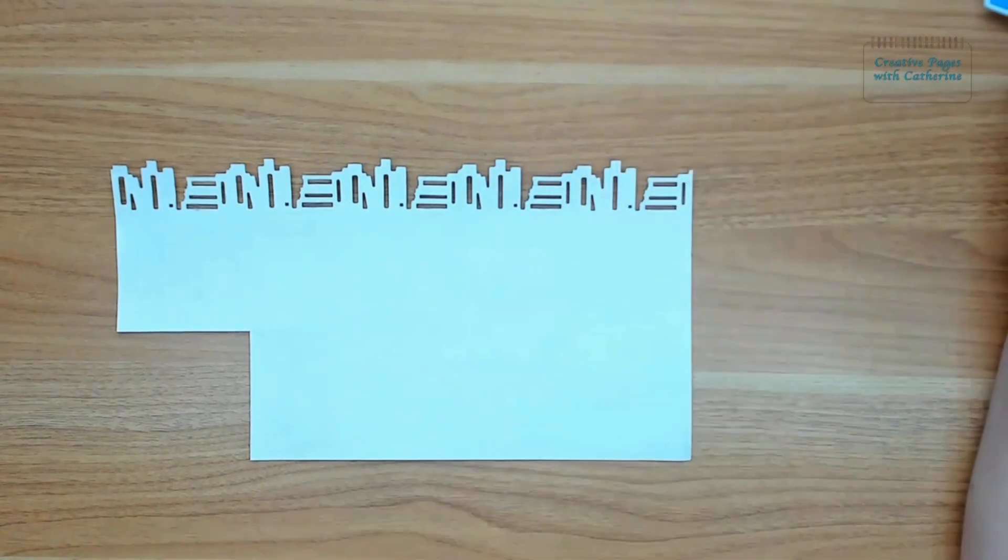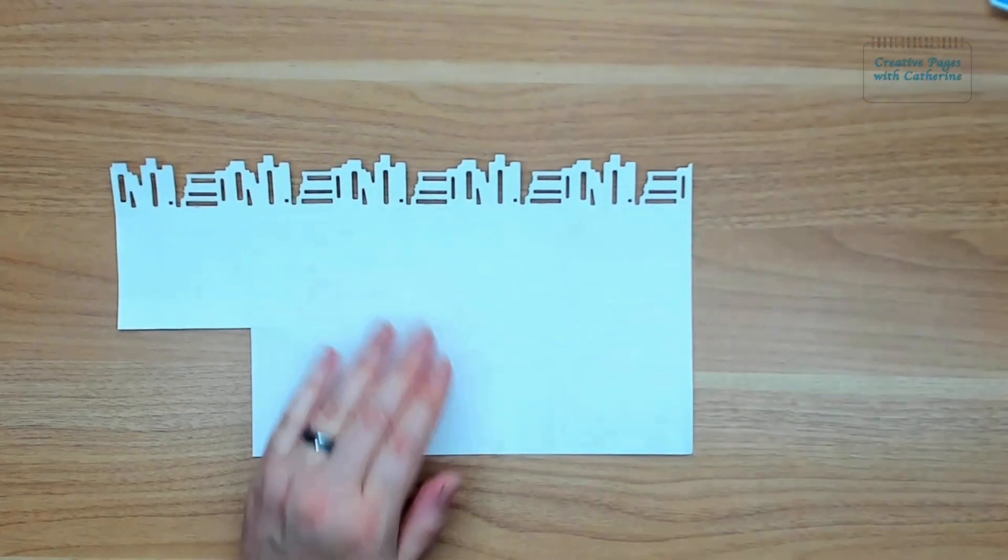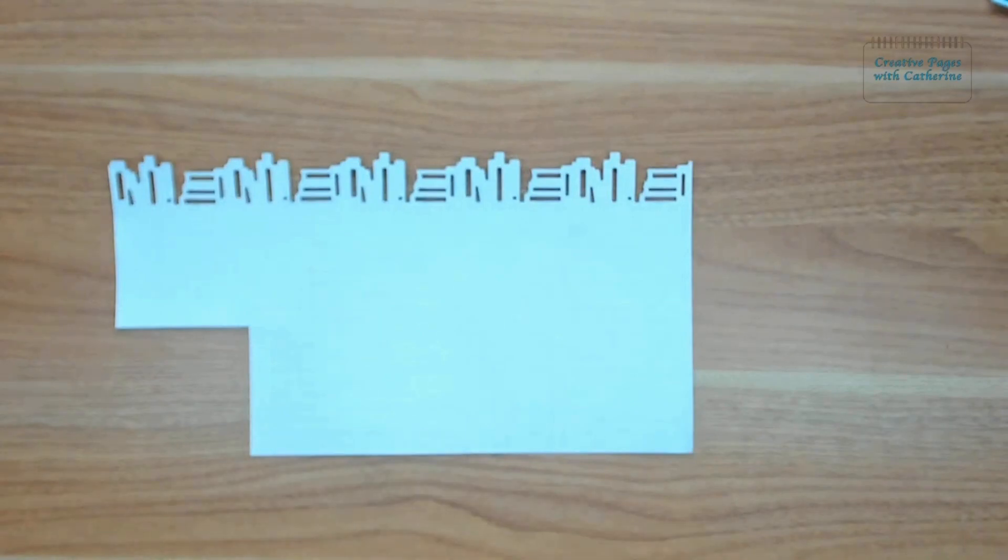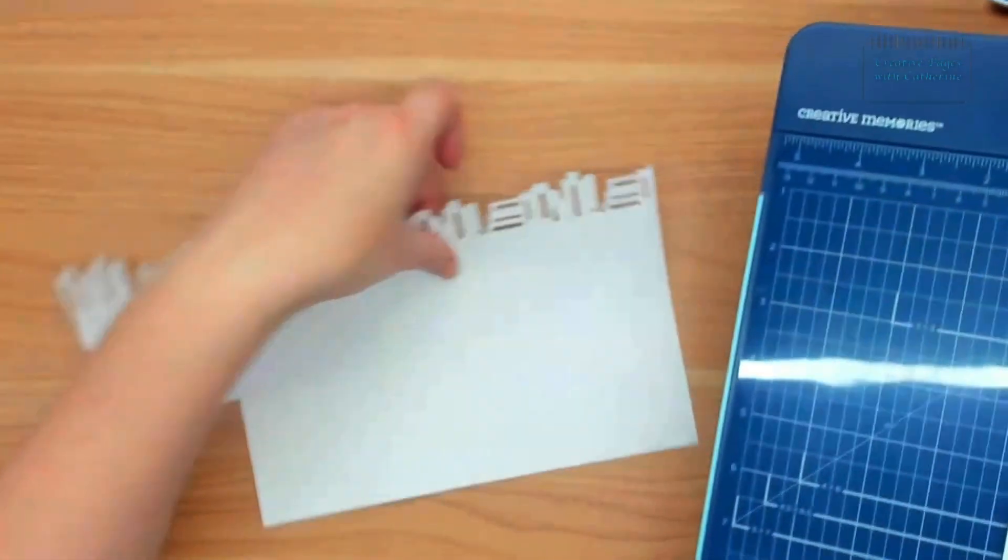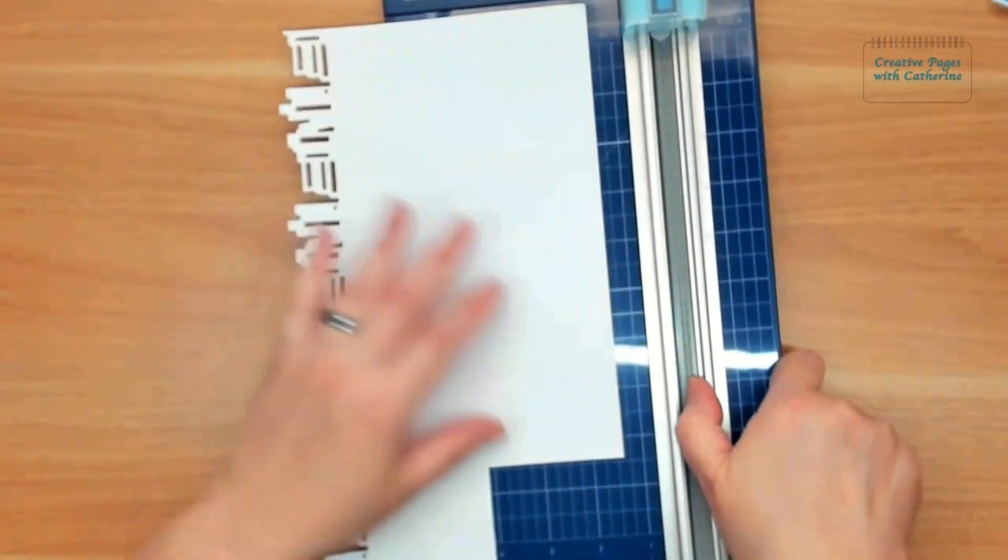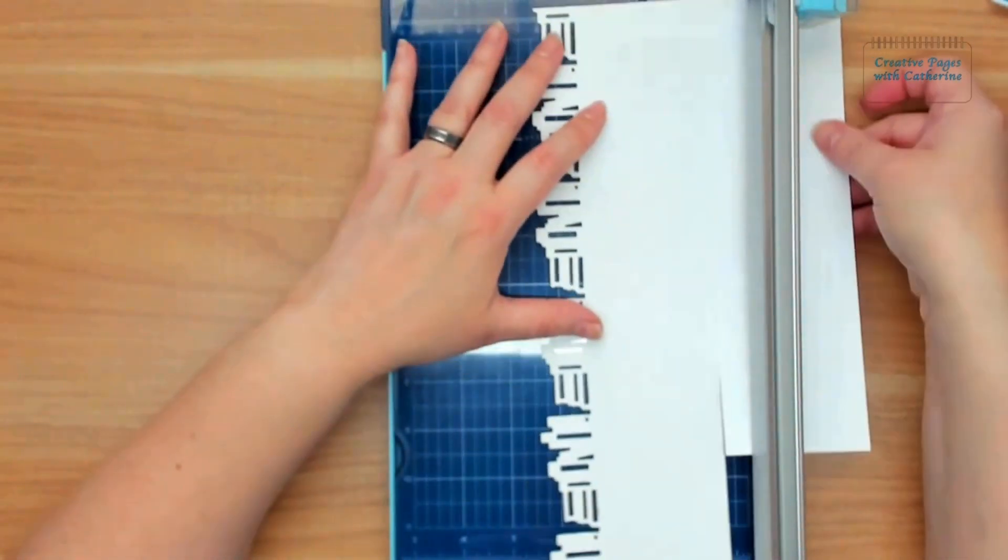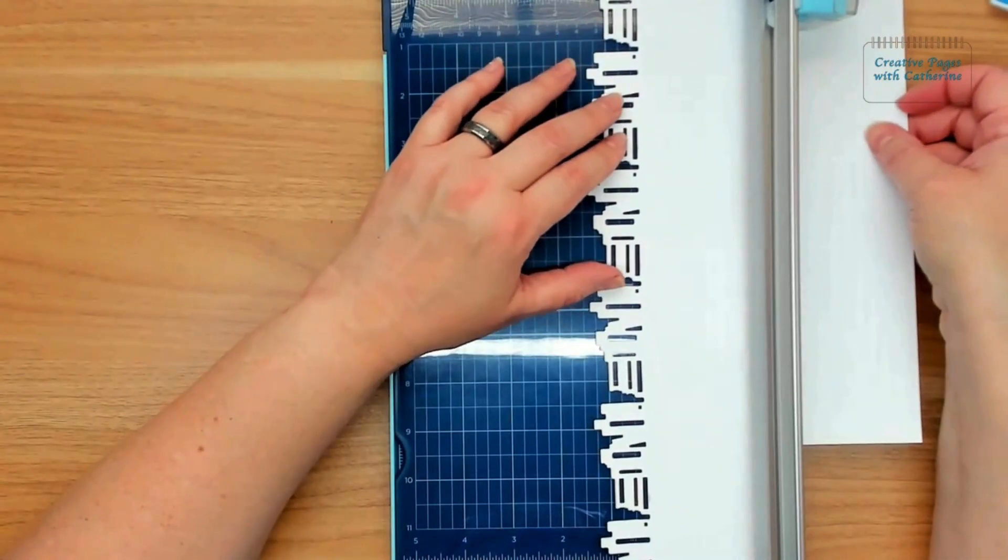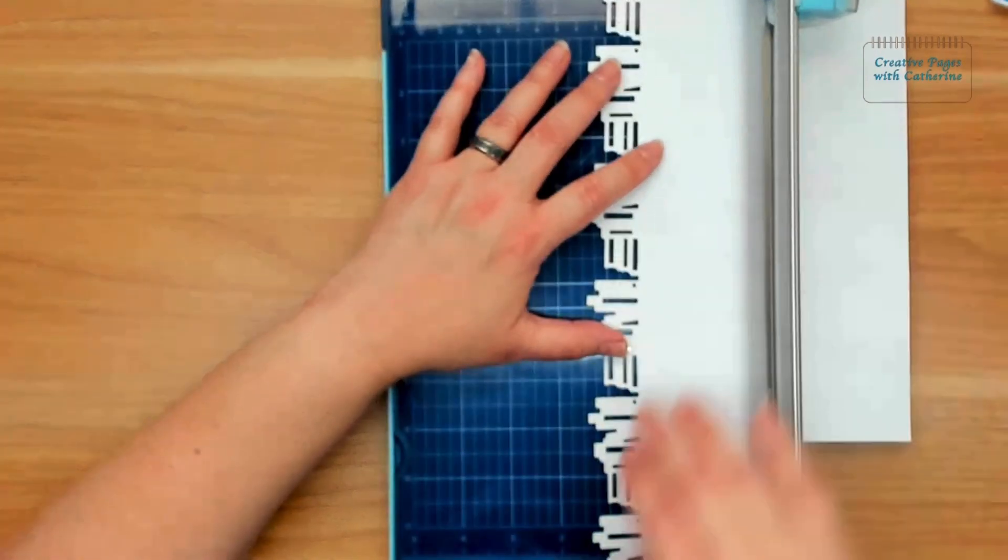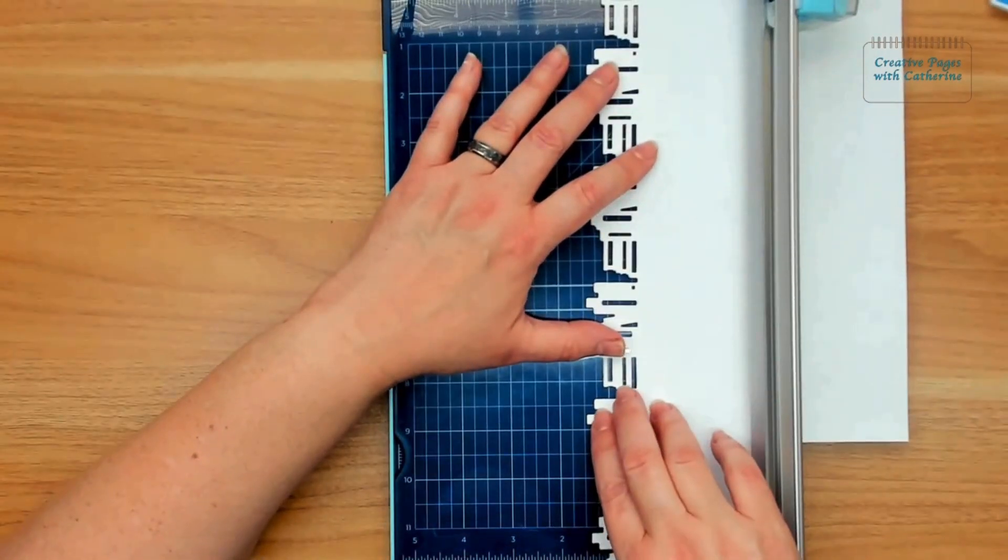We're going to scoot that over because I'm going to bring in my 12 inch trimmer now. We are going to cut this right at an inch and a quarter, which is where I cut it in the other video. Maybe we'll do an inch and a half this time. Why not? Let's do something a little bit different.